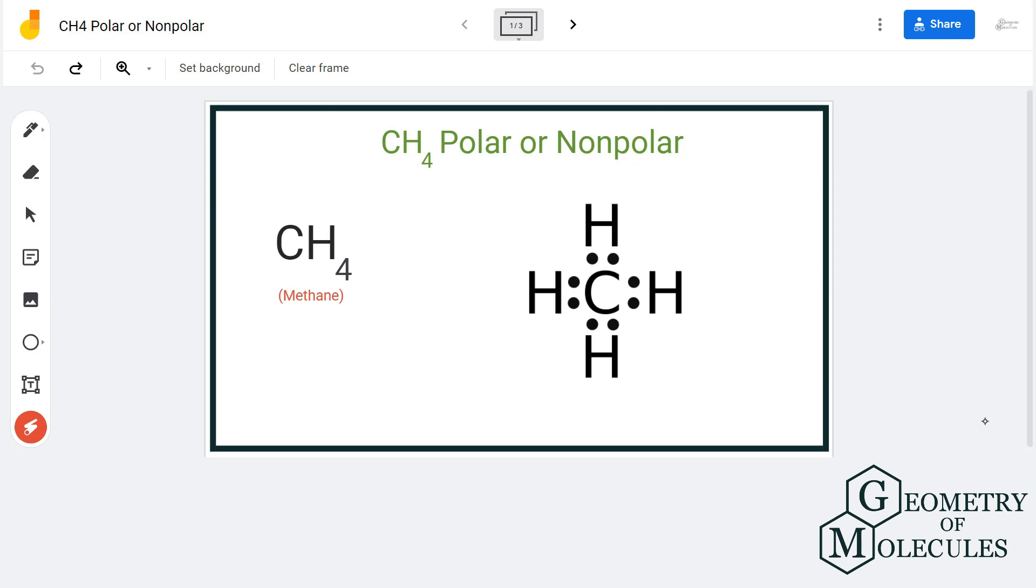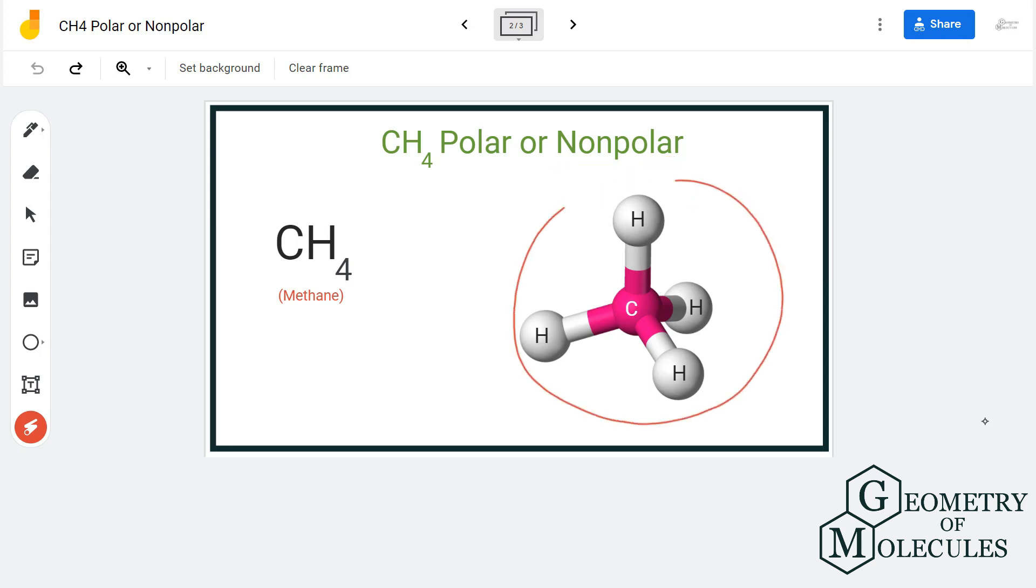Looking at this arrangement, we think this molecule could be non-polar because generally molecules that have symmetry and no lone pairs are non-polar. As you can see, there are no lone pairs and the shape is quite symmetrical. To confirm it further, we will look at its shape.